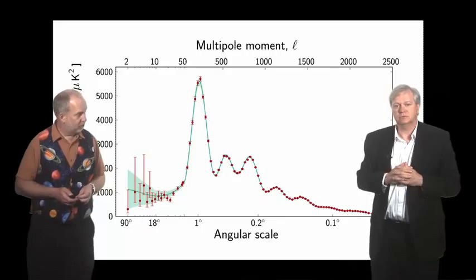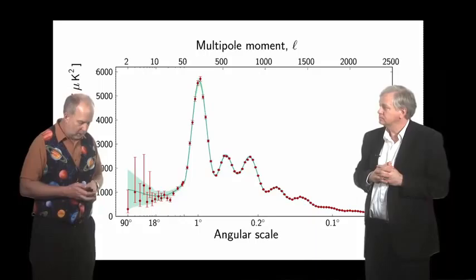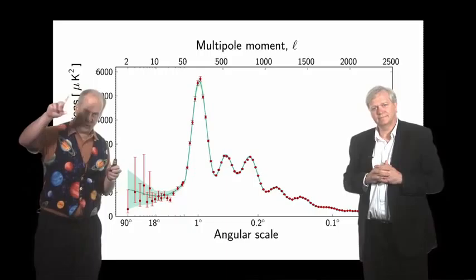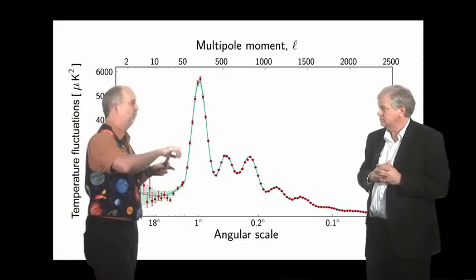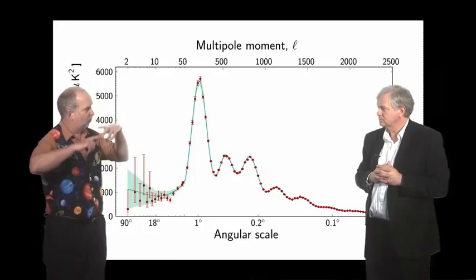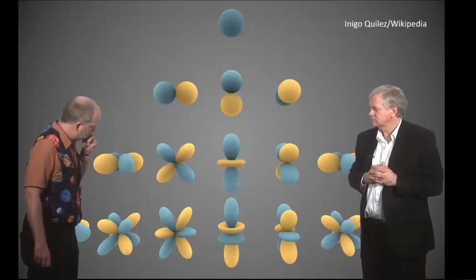We'll talk about the physics of those in a bit. Maybe a digression on how you actually measure lumpiness as a function of scale. This is analogous to spectrum analysis in music. Let's say we have a note - you can break it up into its component frequencies. You're taking the actual waveform of the sound and breaking it up into sine waves. Any periodic function at all can be broken up into sine waves. In this case, it's not just a straight line, it's on a sphere. But there's something similar you can do on a sphere - breaking it up into spherical harmonics, as they're called.